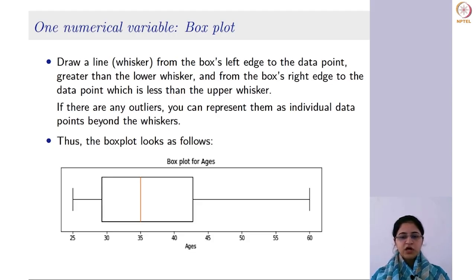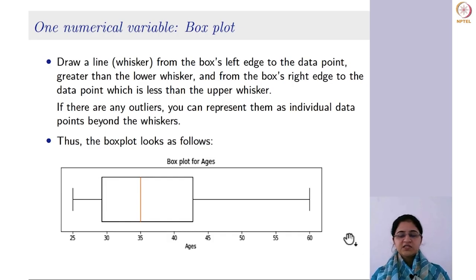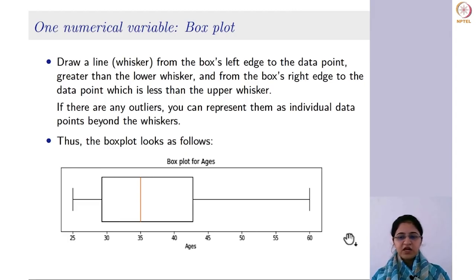We will also learn how to draw the box plot using Python. In this dataset there is no outlier. But if you had an observation where age was 100 — which is beyond the upper whisker of 64 — you would mark an asterisk at that point to show it is an outlier in the dataset.